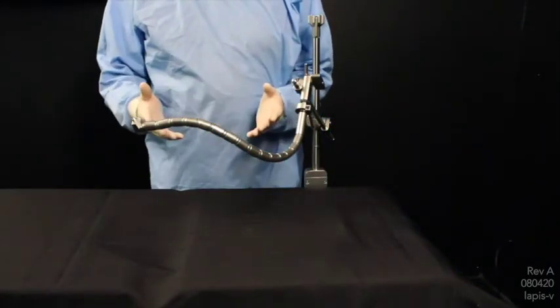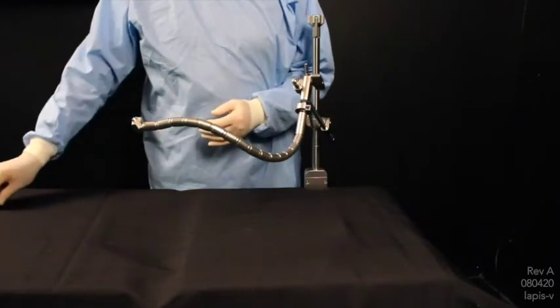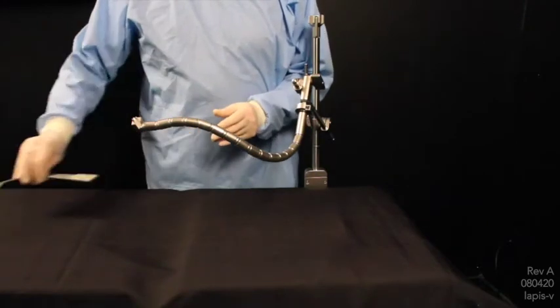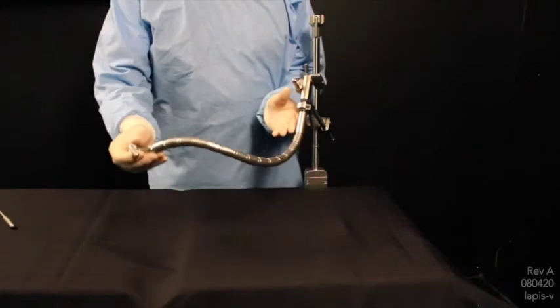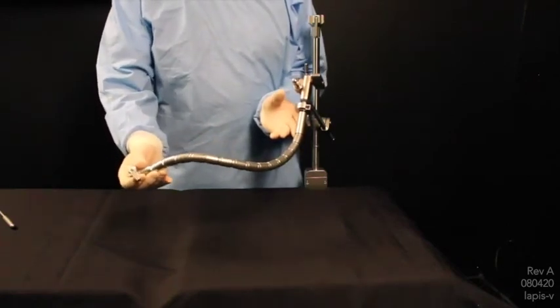In most cases, this is not entirely recommended to use as an instrument holder, for instance using a Nathanson hook. The reason is that the flexibility in this may not be strong enough to maintain a position of holding an organ.